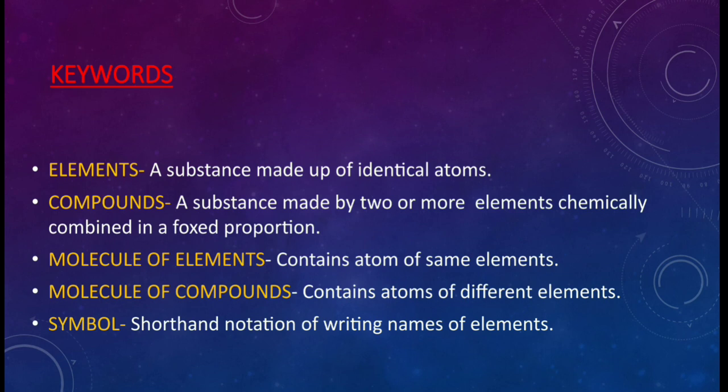Now let us come on the keywords that we have discussed in this second chapter. Elements. A substance made up of identical atoms. Compounds. A substance made up of two or more elements chemically combined in a fixed proportion. Molecule of elements. Contains atom of same elements. Molecule of compound contains atom of different elements. Symbol. Shorthand notation of writing names of elements.